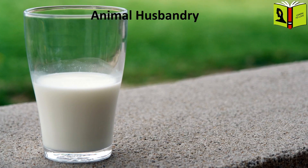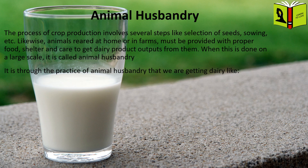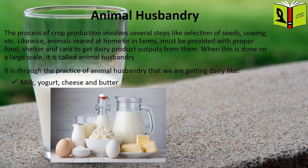Animal Husbandry. The process of crop production involves several steps like selection of seeds, sowing, etc. Likewise, animals reared at home or in farms must be provided with proper food, shelter, and care, to get dairy product outputs from them. When this is done on a large scale, it is called animal husbandry. It is through the practice of animal husbandry that we get dairy products like milk, yogurt, cheese, and butter, as well as eggs and meat.